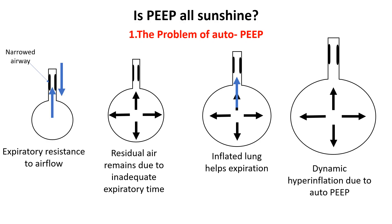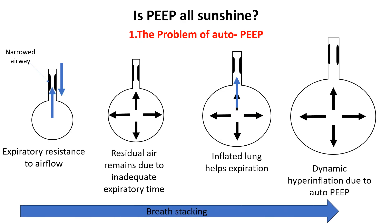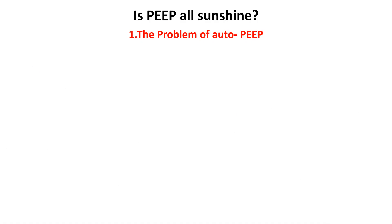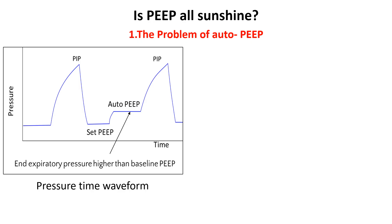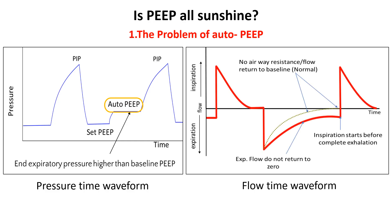The inability to fully exhale before the next breath is delivered is known as breath stacking, which can worsen hyperinflation, increase work of breathing, and lead to hemodynamic compromise if not carefully managed. In ventilator waveforms such as the pressure-time scalar, the pressure at the end of expiration does not return to the baseline set PEEP, indicating that the lungs are becoming hyperinflated with high pressure due to auto-PEEP. In the flow-time waveform, the expiratory wave does not return to baseline, meaning inspiration has started before the end of expiration.